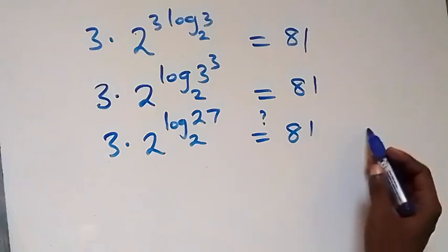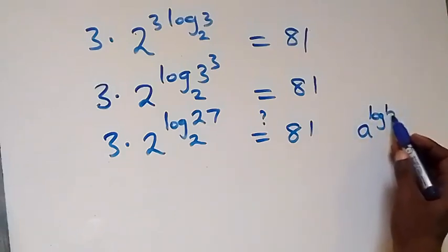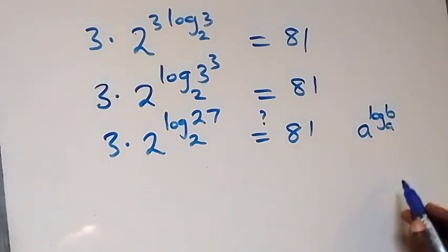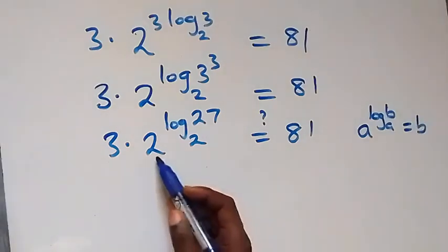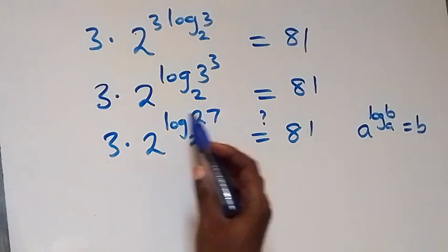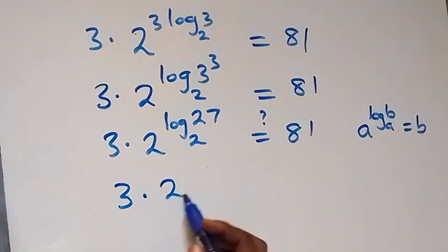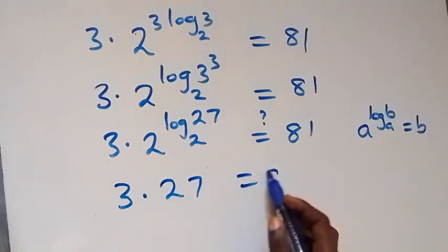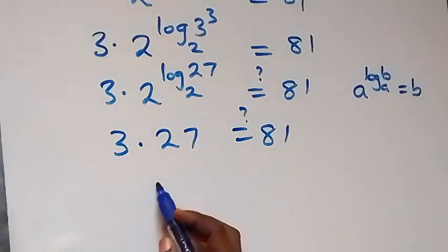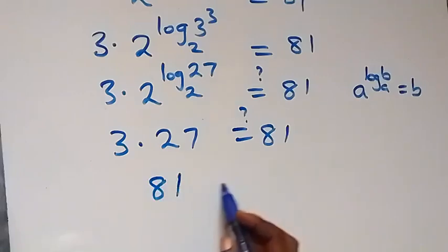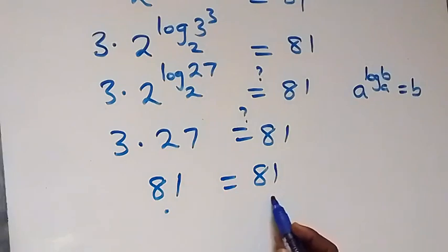From here, using the identity a raised to power log b base a equals b, this gives us 27. So we have 3 times 27 equals 81, and 3 times 27 is of course 81, which equals 81. The left-hand side equals the right-hand side.